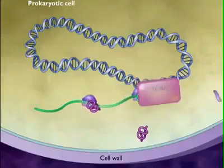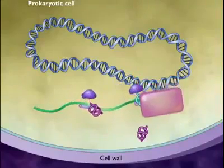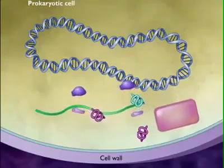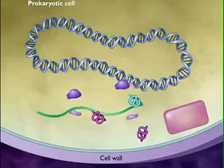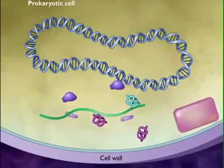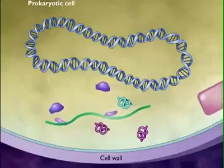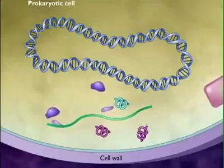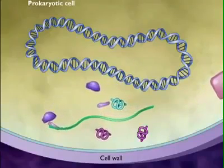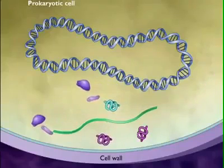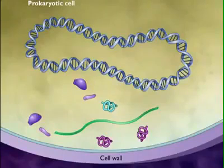Individual bacterial mRNA molecules often contain transcripts of several genes. By placing genes with related functions on the same mRNA, bacteria coordinate the synthesis of these proteins. These clustered genes are referred to as an operon.